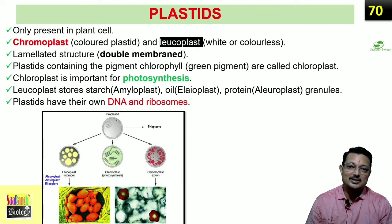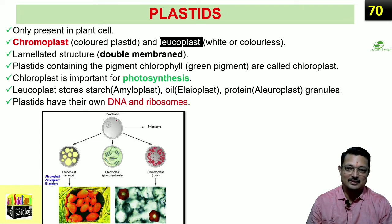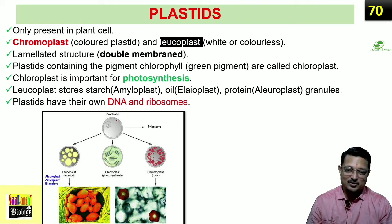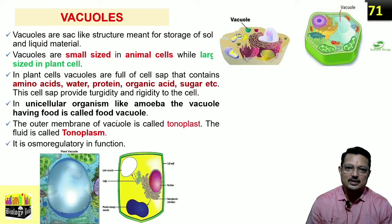So which was the earlier semi-autonomous cell organelle we discussed? It was mitochondria. Now let us jump to another cell organelle — Vacuoles.